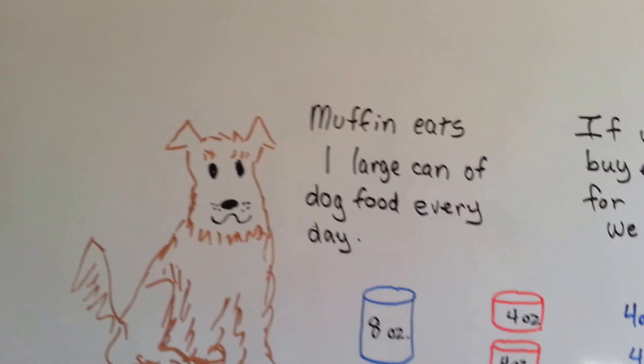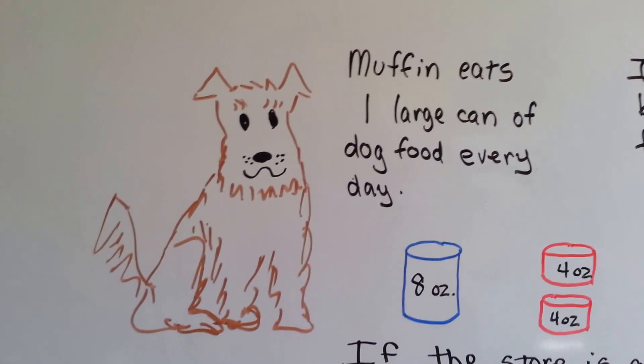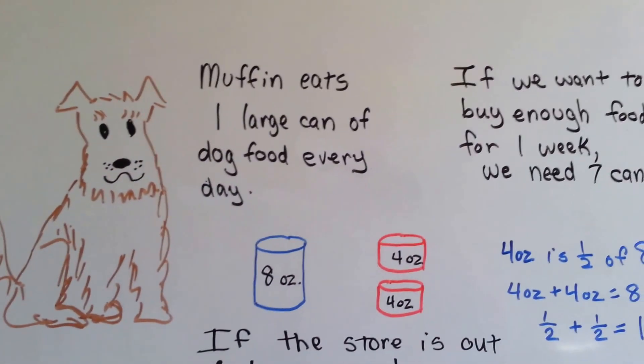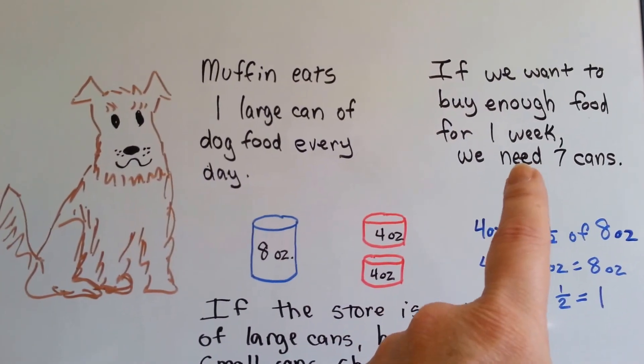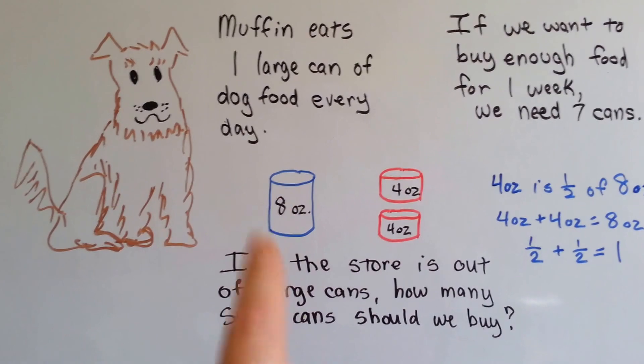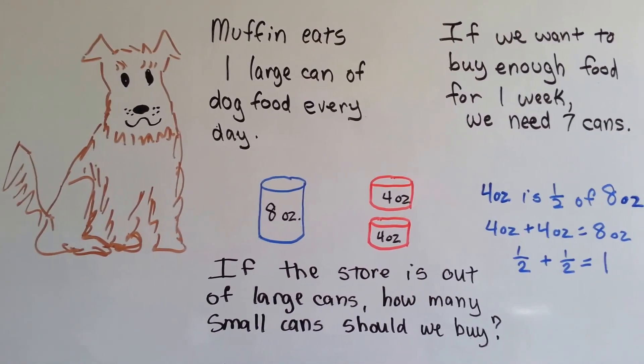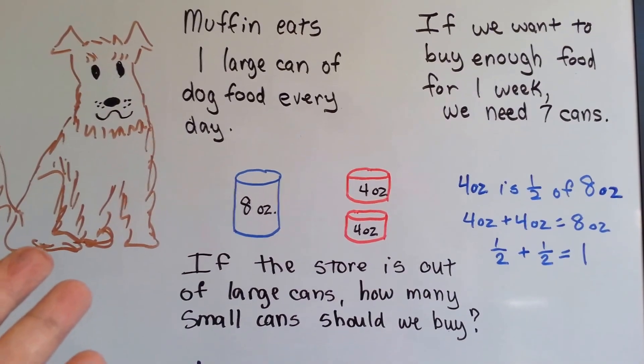So now look at what we got here. We got our dog, Muffin. Did you know Muffin eats one large can of dog food every day? If we want to buy enough dog food for one week, there's seven days in a week, we need seven cans. The problem is the store is out of large cans. They only have the small cans. So we need to figure out how many small cans we should buy to feed Muffin.